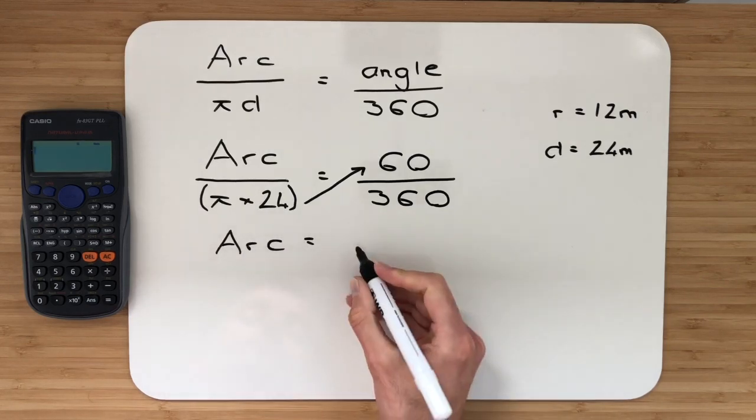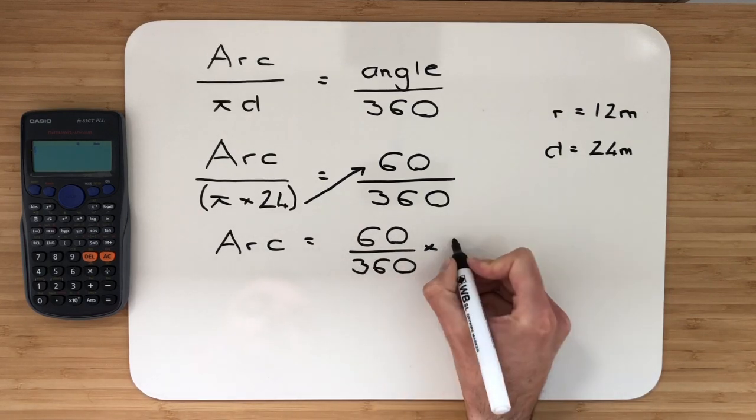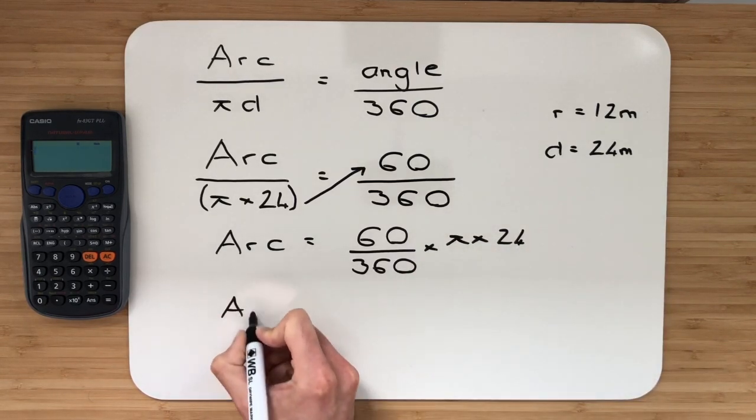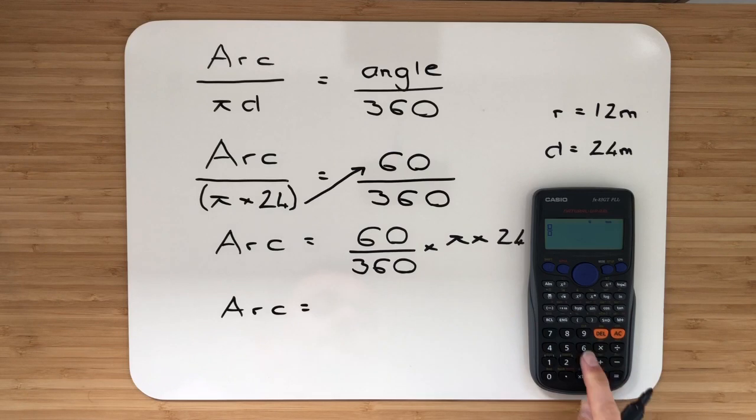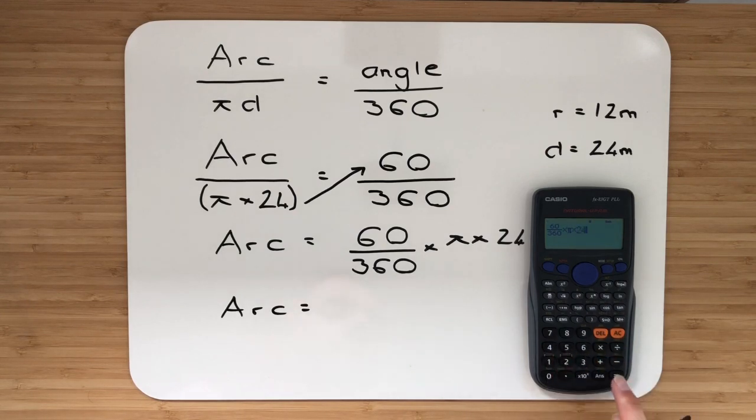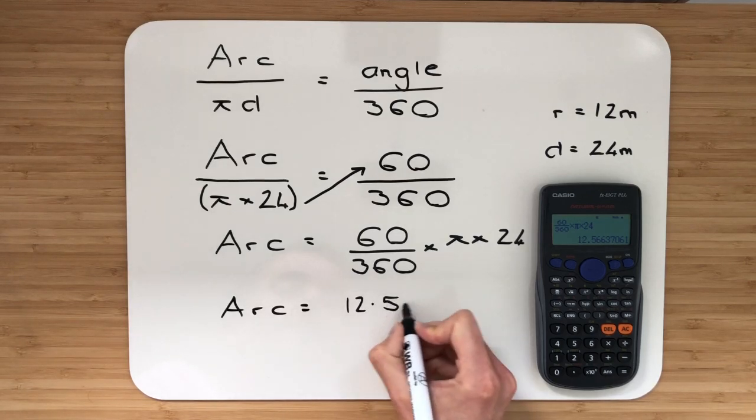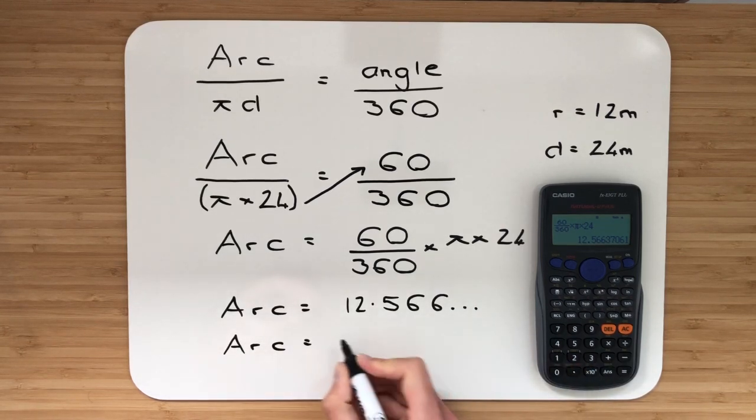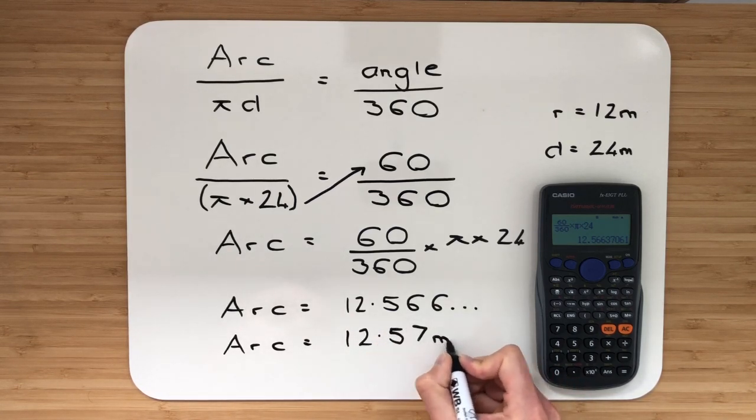So arc is equal to 60 over 360 multiplied by pi multiplied by 24. Arc is equal to... let's type all this into the calculator. I've got my fraction button, 60 over 360, press that across, multiply by pi multiplied by 24. That's going to come out as 12.566 and it keeps on going. I will round that to 12.57, and it should be units of metres.